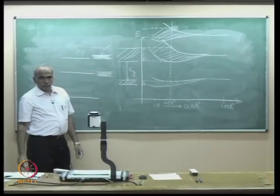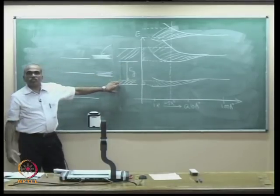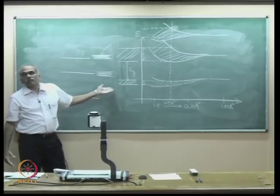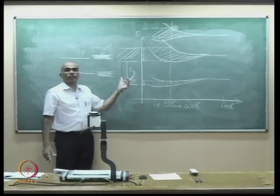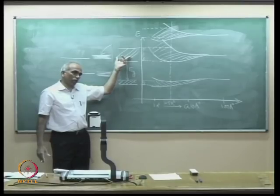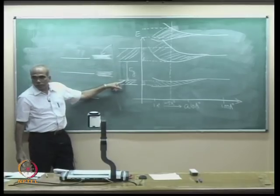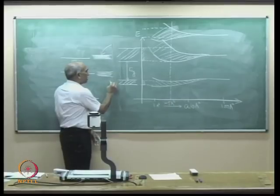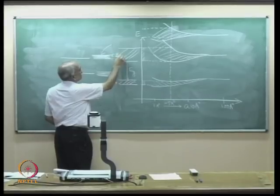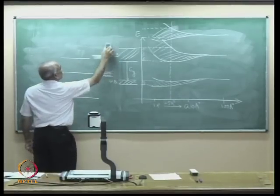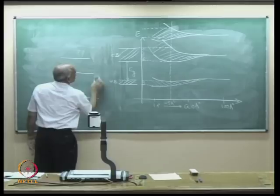The highest band which is completely filled is called the valence band. The next band is called the conduction band. The energy separation between the valence band and the conduction band is the band gap, Eg. There may be many more bands above, but there are no electrons there, so we are not concerned with them.